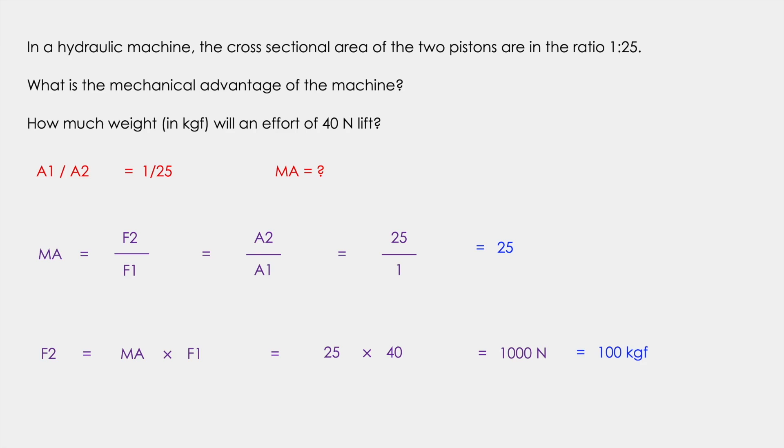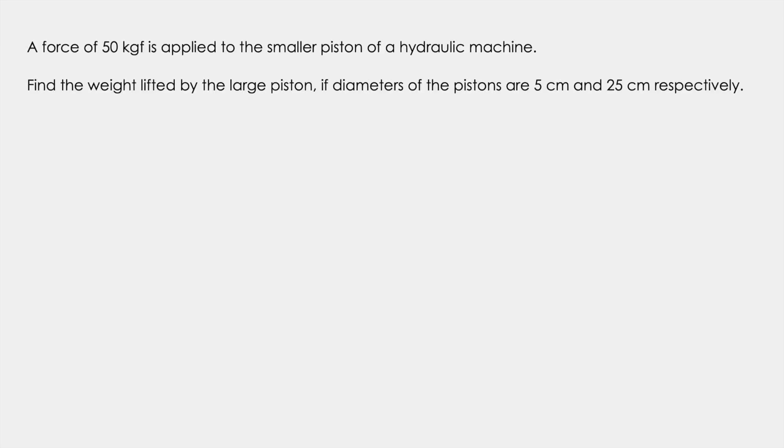Now let's look at another problem. A force of 50 kgf is applied to the smaller piston of a hydraulic machine. Find the weight lifted by the larger piston if the diameters of the pistons are 5 cm and 25 cm respectively. So here the input force F1 is 50 kgf. The diameter of the smaller piston is 5 cm and the diameter of the larger piston is 25 cm. We need to find out F2.